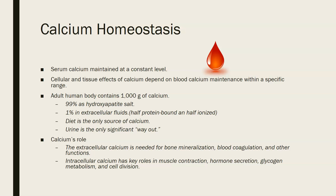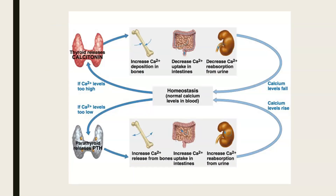Your diet is the only source of calcium, and the urine is the only significant route of excretion. Extracellular calcium is needed for bone mineralization, blood coagulation, and other functions. Intracellular calcium has key roles in muscle contraction, hormone secretion, glycogen metabolism, and cell division. Blood calcium levels are also critical to heart function because heart muscle needs calcium to contract.